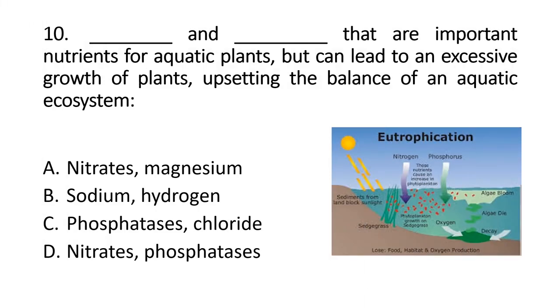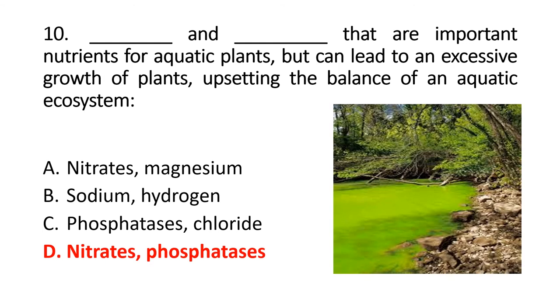Question 10: Blank and blank are important nutrients for aquatic plants but can lead to excessive growth of plants, upsetting the balance of aquatic ecosystems. The right option is D: Nitrates and phosphorus. These are two reasons for the formation of algal blooms. Algal blooms are problematic because sunlight cannot penetrate the surface and gas exchange is blocked. If nitrates and phosphorus fall into a water body, the lake will become enriched with nutrients. This is called eutrophication, meaning the enrichment of a lake with nutrients.